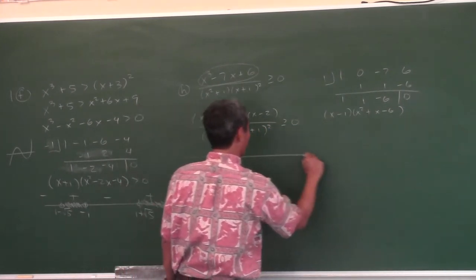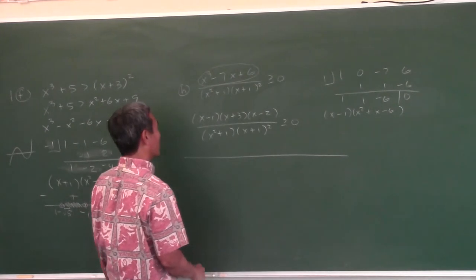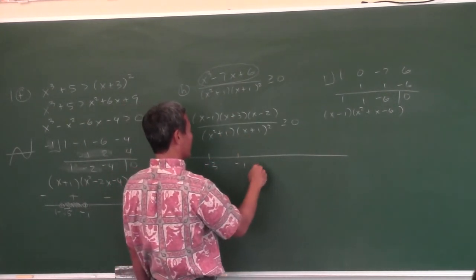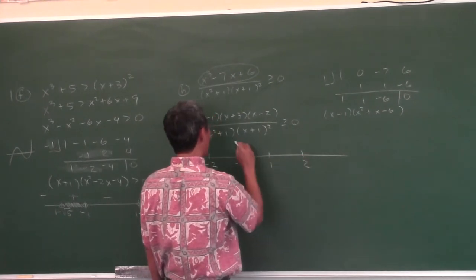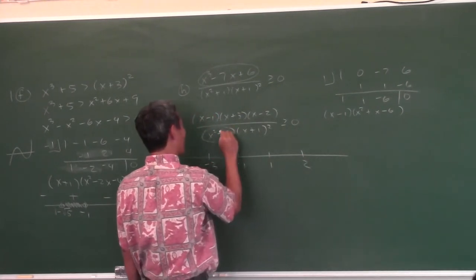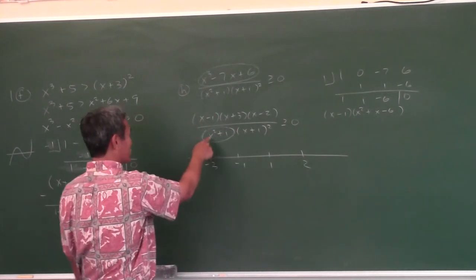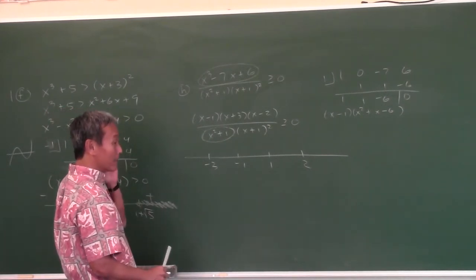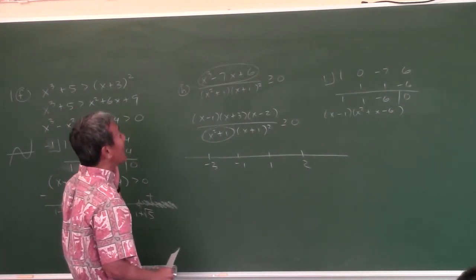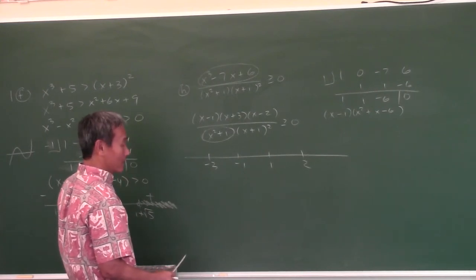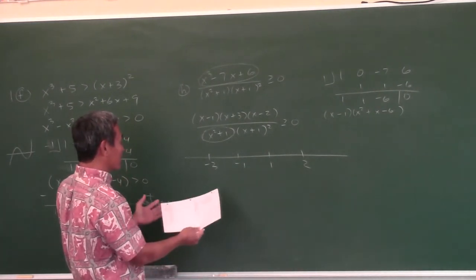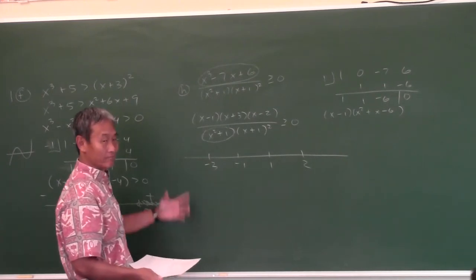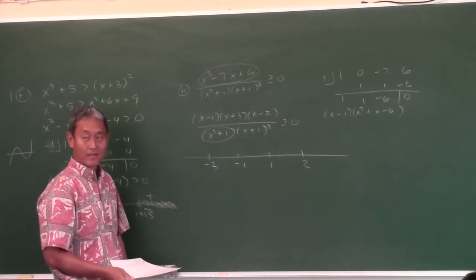So when you make your number line, what goes on it? Negative 3, negative 1, 1, and 2. What about x squared plus 1? The zeros are plus or minus i. So where do you put imaginary numbers on a real number line? You don't. Any time we have imaginary zeros, that factor is always going to be positive or always negative. Plug in zero — it's positive. So it's always positive; you can just ignore it.